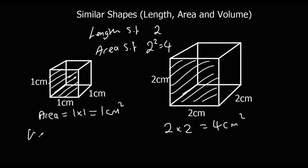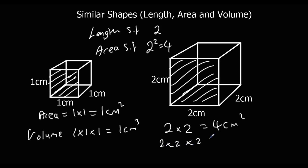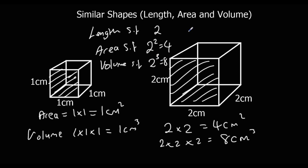For volume, the volume of the small shape is 1 times 1 times 1, which is 1 centimetre cubed. The volume of the large shape is 2 times 2 times 2, which is 8 centimetres cubed. So the volume scale factor is 2 cubed, which is 8. The scale factor for area is squared, and the scale factor for volume is cubed.